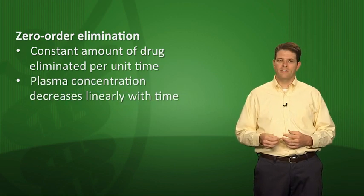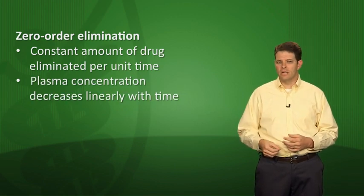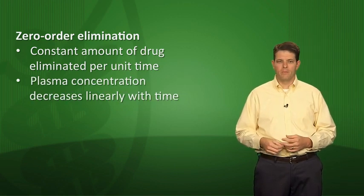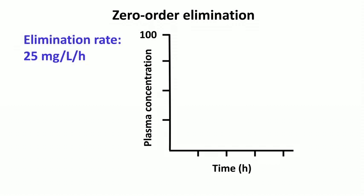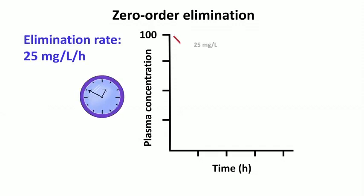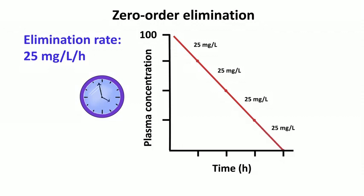Another way to describe zero-order elimination is that the plasma concentration decreases linearly with time. If you start with a plasma concentration of 100 mg/L and the zero-order elimination rate is 25 mg/hour, after one hour the level goes from 100 to 75, then 75 to 50, then 50 to 25, then to zero — so after four hours the drug is completely gone.